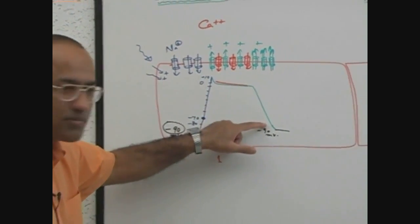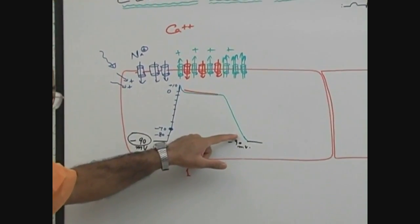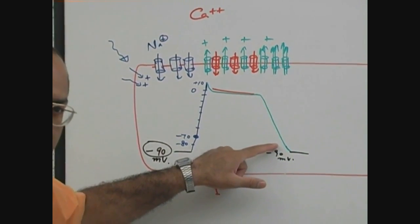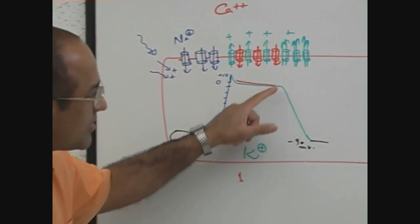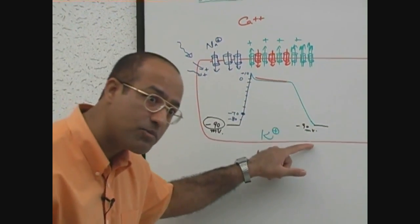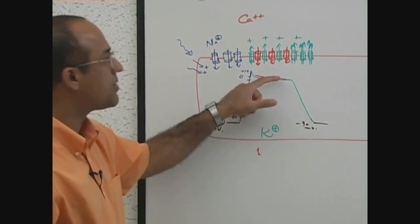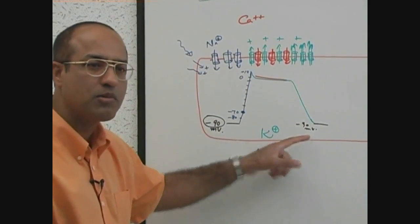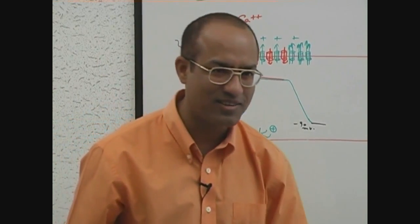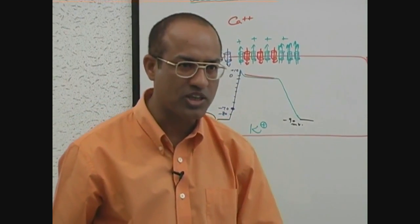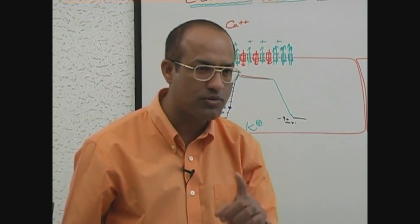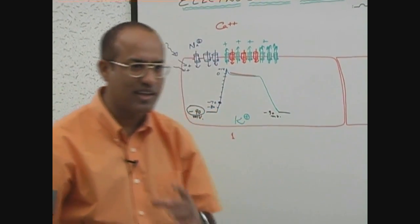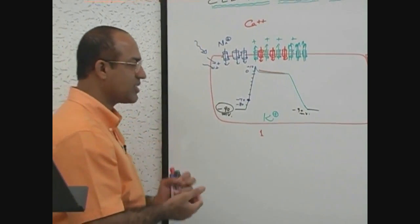What happens during this time? The membrane has electrically come back to its negative polarization. If the membrane has come back to its negative polarization, it means the membrane is repolarized. Due to potassium efflux, the membrane has undergone the phenomenon of repolarization.